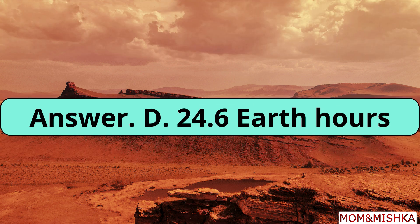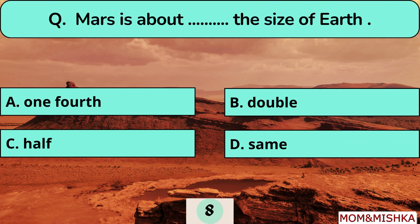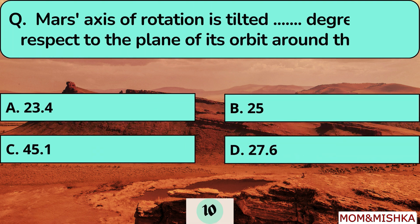Mars takes 24.6 Earth hours to rotate on its axis, so one day on Mars equals 24.6 Earth hours. Mars is about half the size of Earth. Mars's axis of rotation is tilted 25 degrees with respect to the plane of its orbit around the Sun.